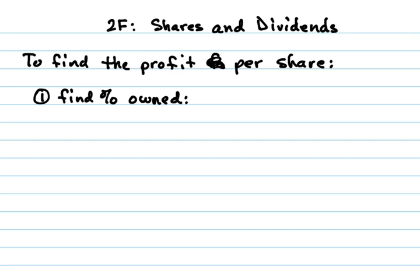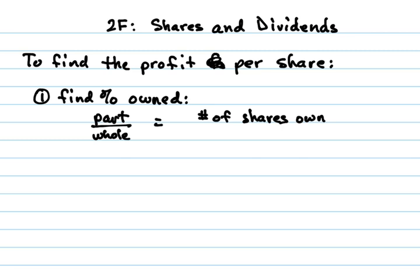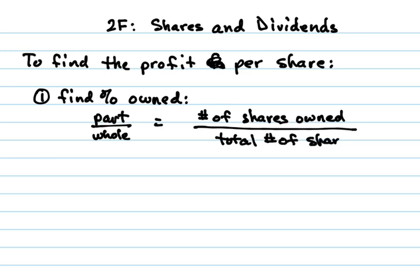We've found percents before. Remember that finding a percent is simply the part over the whole amount. In this case, the part means the shares you own, and the whole is going to be the total number of shares. So to find the percent you own, you're just going to take the number of shares owned and divide that by the total number of shares. They'll give you those two pieces of information so that you can find the percent.